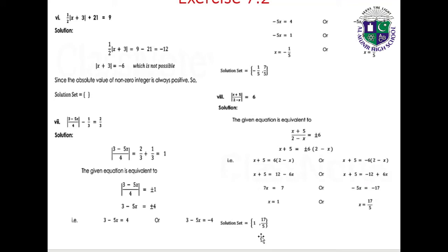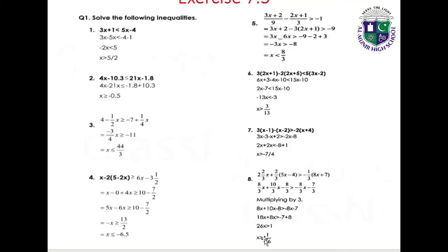Exercise 7.3: Solve the inequalities. Question 1: 3x plus 1 less than 5x minus 4. Rearranging: 3x minus 5x less than minus 4 minus 1, giving minus 2x less than minus 5, therefore x greater than 5/2. Solution: x greater than 5/2.